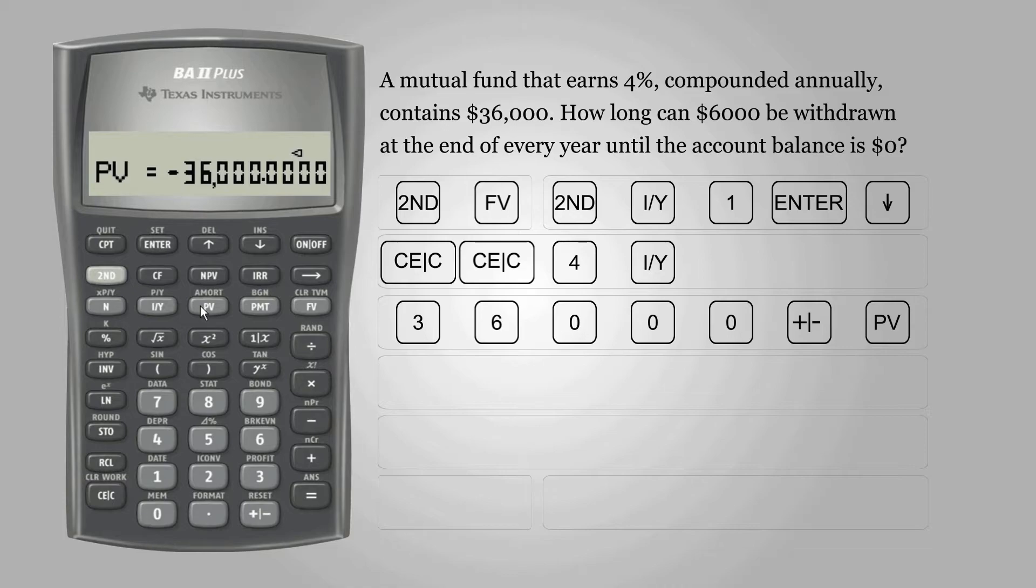For payments, enter 6000 and press PMT. Finally, for future value, enter 0 and press FV.